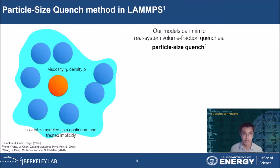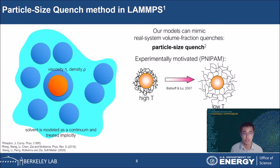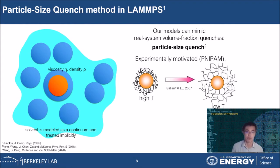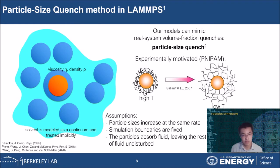In this project, we developed a new particle size quench method in LAMMPS. This method is motivated by experiments conducted by my former collaborators, where they used PNIPAM microgel particles to trigger the glass transition by a jump in particle sizes at fixed system volume. One interesting feature of such particles is that they swell upon cooling and shrink upon heating. In our model, we constructed many particles in a Newtonian solvent, each able to shrink or grow in size at a controlled rate within a fixed simulation box. We assume that the particles grow by absorbing fluid, giving minimum disturbance to the surrounding fluid.